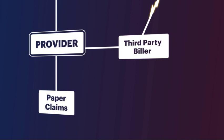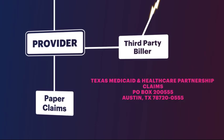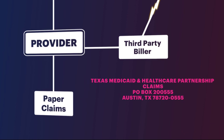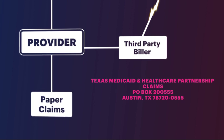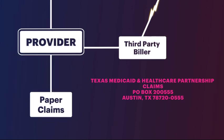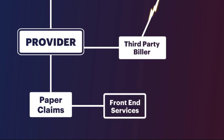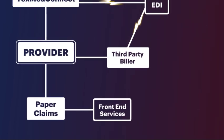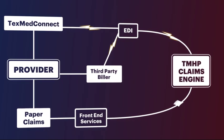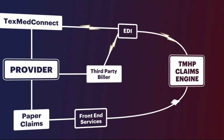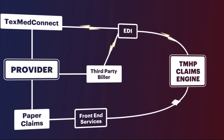Providers can fill out the paper claim form and mail it into TMHP at: Texas Medicaid and Healthcare Partnership Claims, PO Box 20055, Austin, Texas 78720-0555. Claims mailed to TMHP will be entered into the system by the Front End Services Department. Claims entered by Front End Services will go directly to the claims processing engine, and claims are submitted individually. Rejected paper claims will be mailed back to the provider with a letter of explanation.